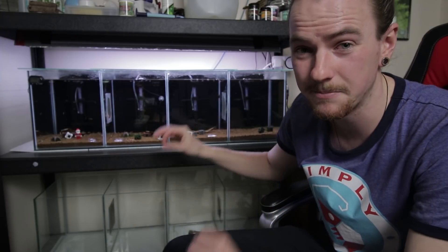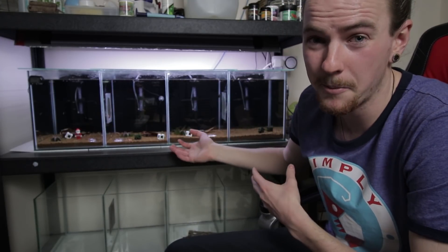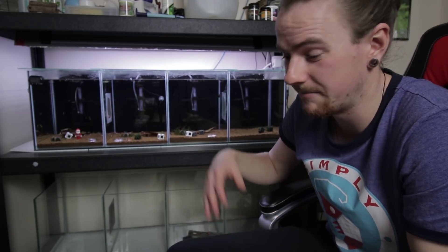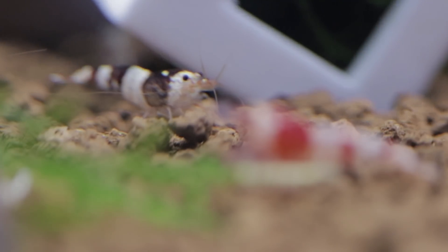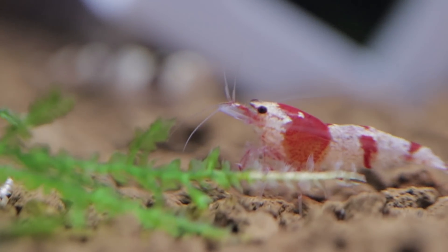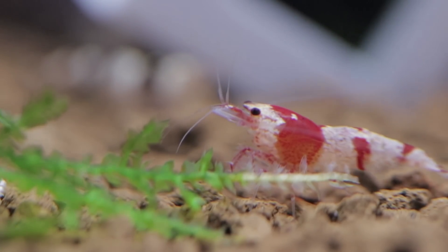They aren't actually pure red lines or PRL shrimp. They might pop out a crystal black in the future. Hey-ho! So what I'm actually going to do is if a crystal red baby shrimp ends up in another tank, I'm just going to put it in the crystal red shrimp tank, even if it's from crystal blacks and vice versa. If it's crystal black shrimp running around, then I'll just put it in the crystal black shrimp tank.